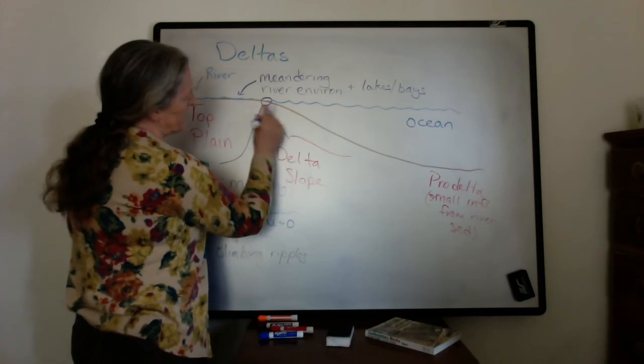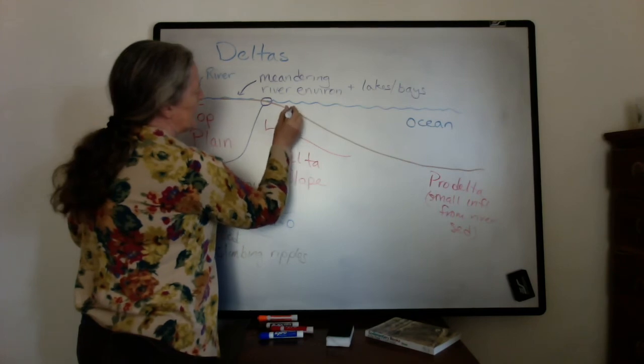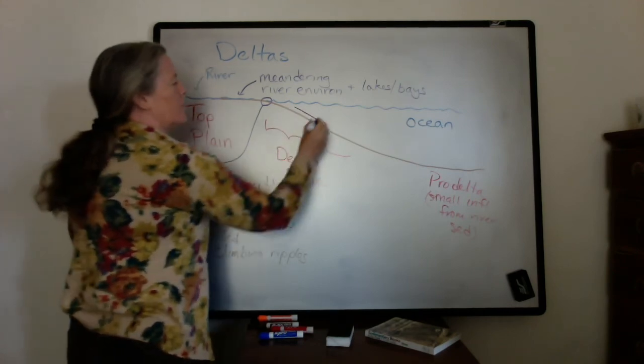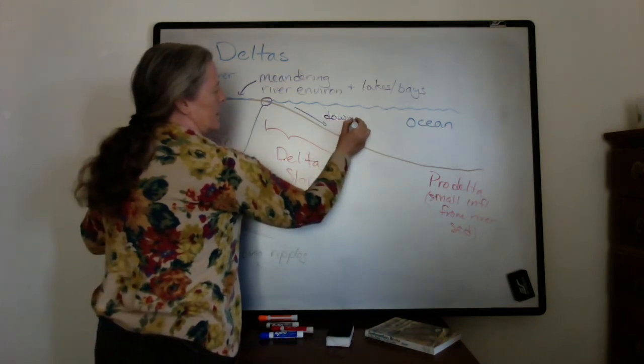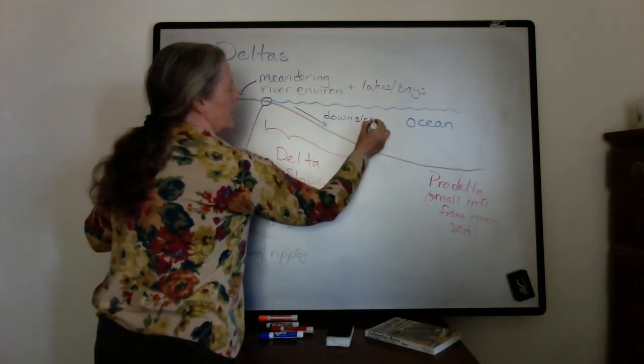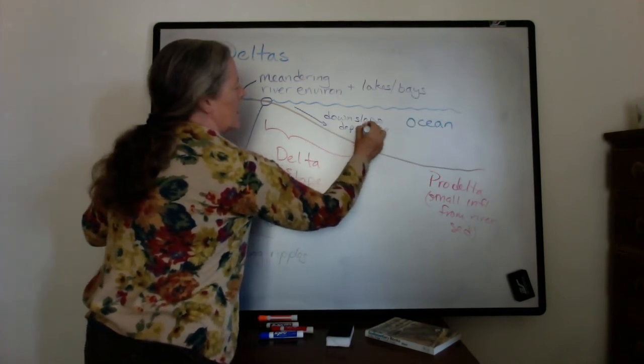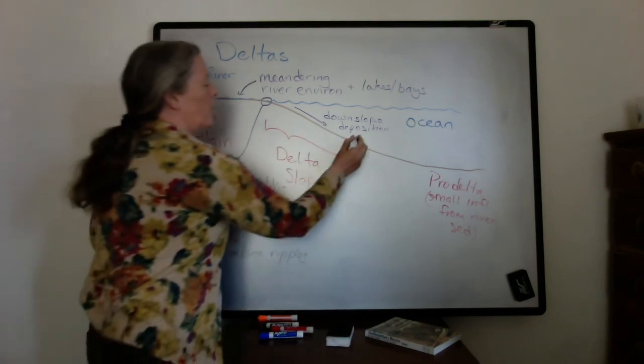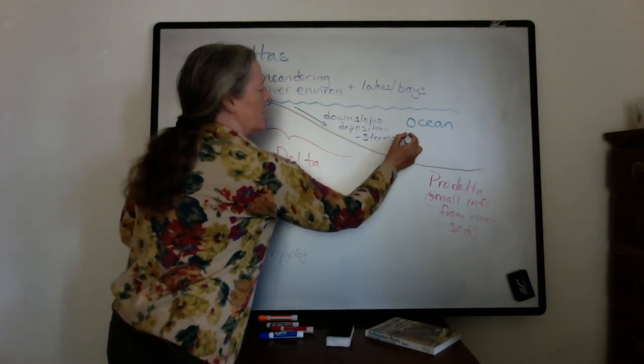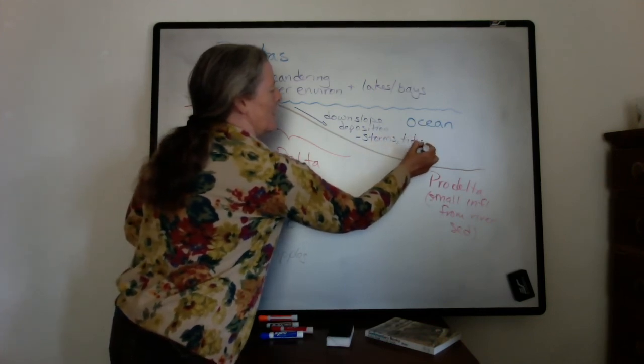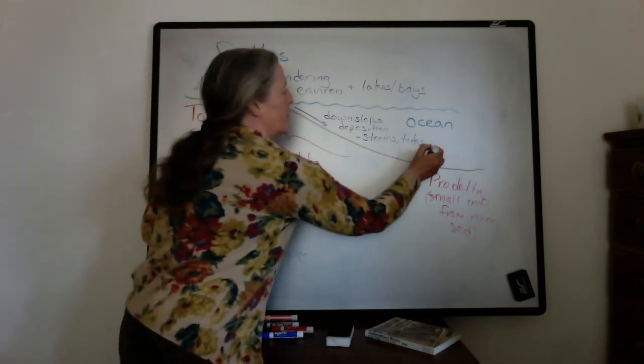On the delta slope, there are various transport processes that move the sediment downslope. The average direction of sediment is downslope deposition. That can occur with storms and waves, with tides, or if neither of those are enough, the slope can build up steep enough that you end up with turbidites.